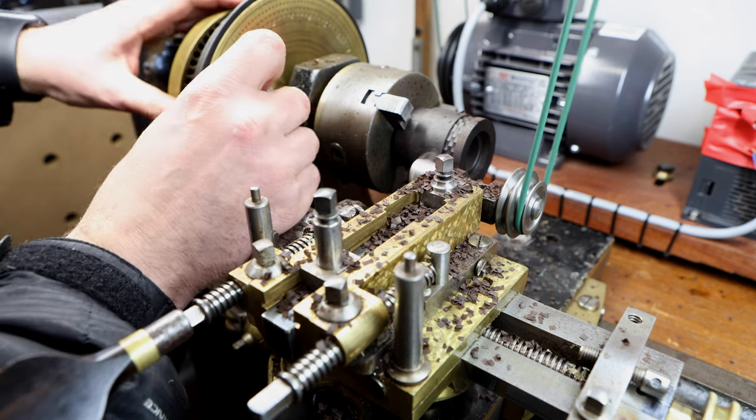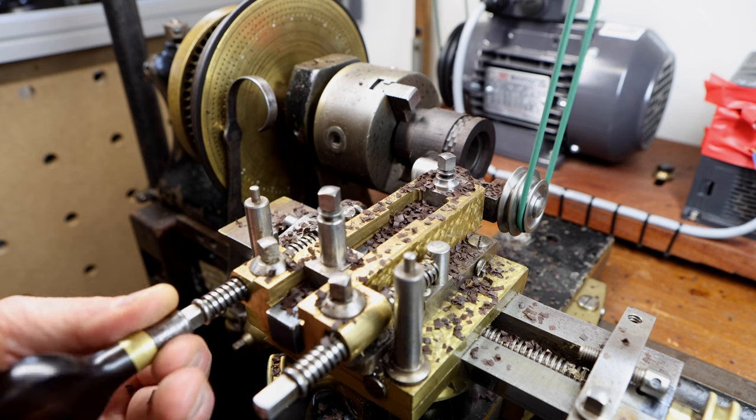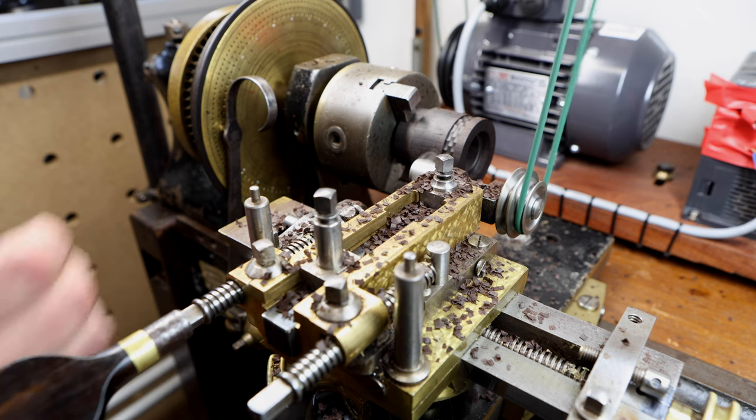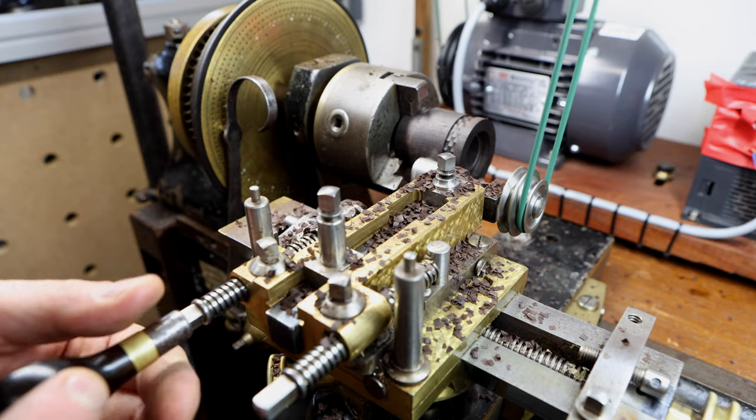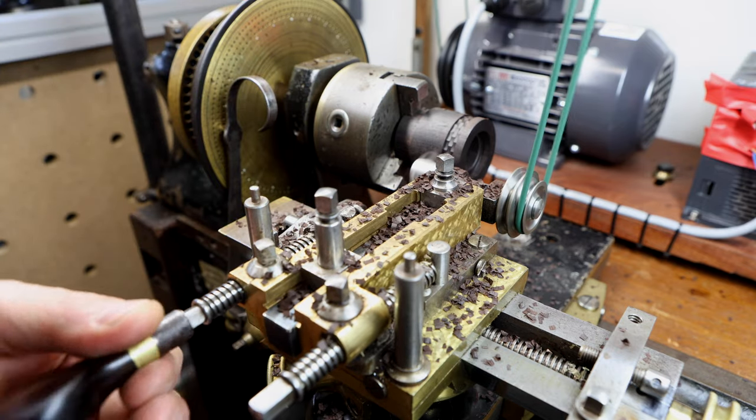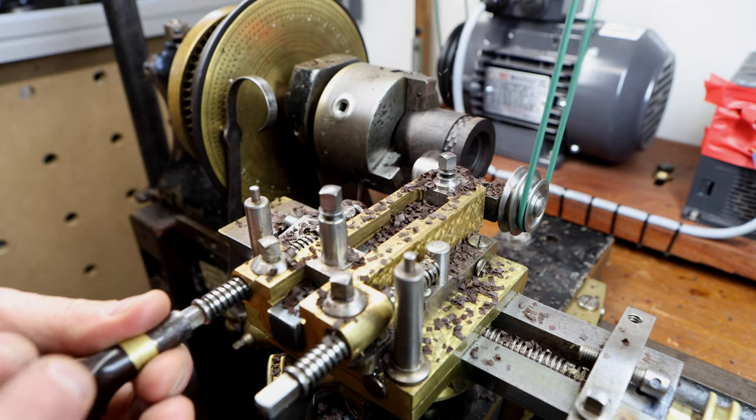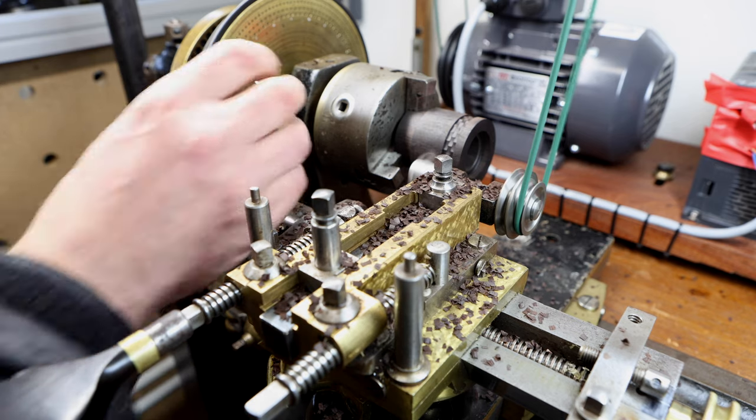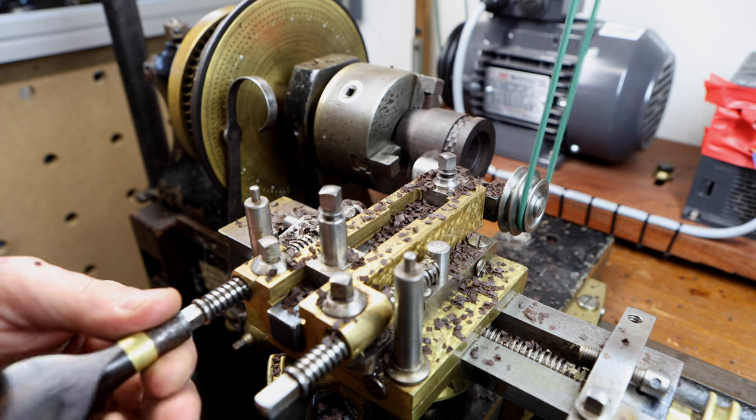This particular machine was made by a company called Holtzapffel & Co based in London and was sold in 1837 for the princely sum of 18 pounds. Now when you consider at the time you could buy a house for not a lot more money than that, this was obviously a reserve of wealthy gentlemen and the landed gentry. Now you don't necessarily need vintage equipment in order to do ornamental turning. It is possible, I have seen good results with converted engineering lathes.